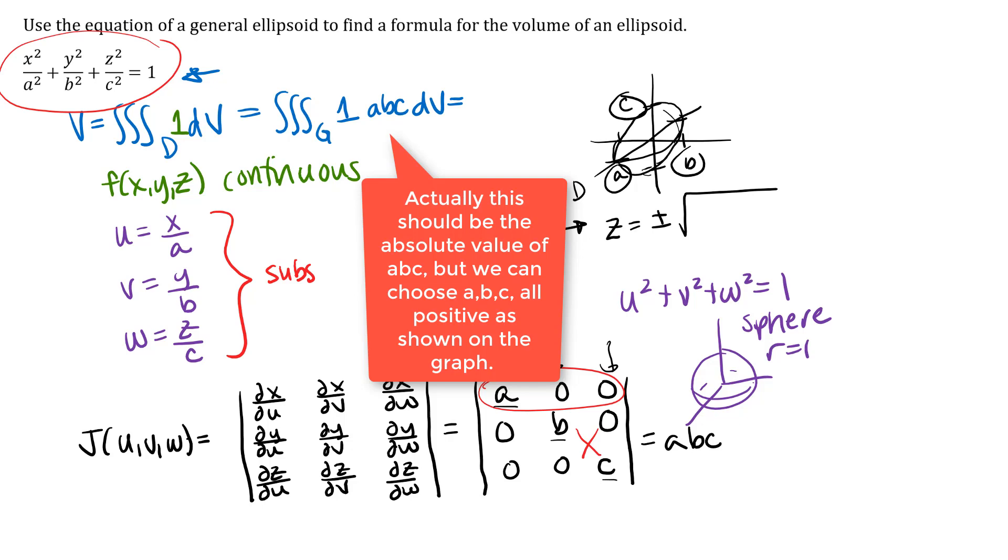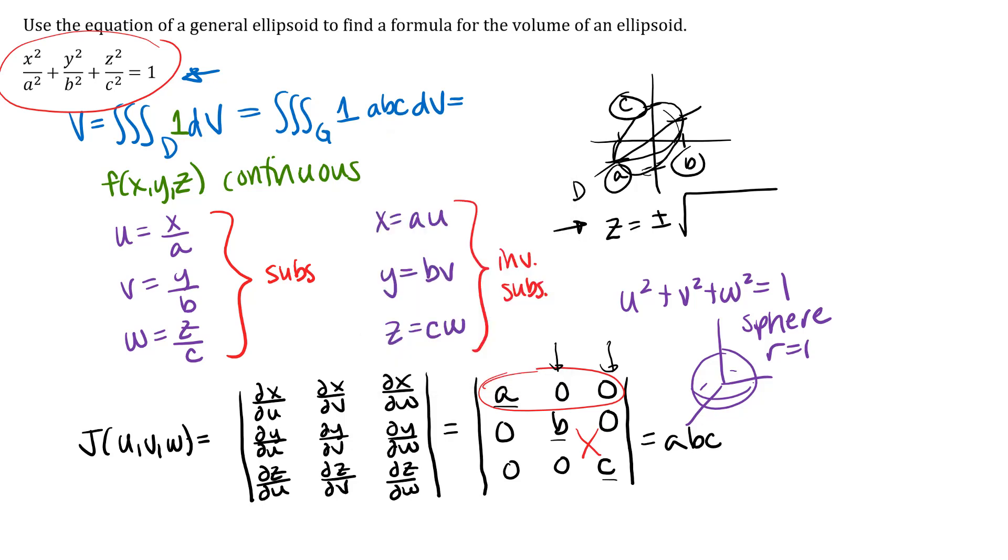And this one is actually one where you can now just write down the answer. A, b, and c are constants, so you can pull that outside of the integral sign. And then this integral that's left would be the volume of g.